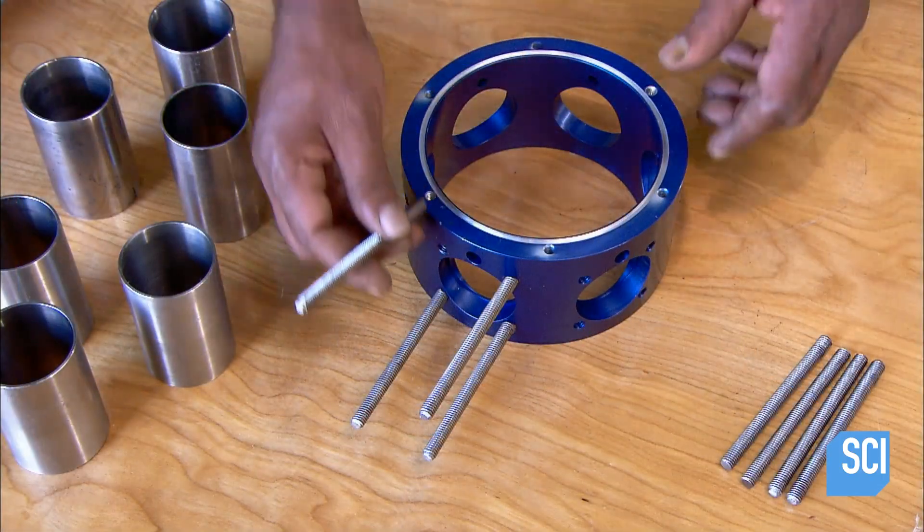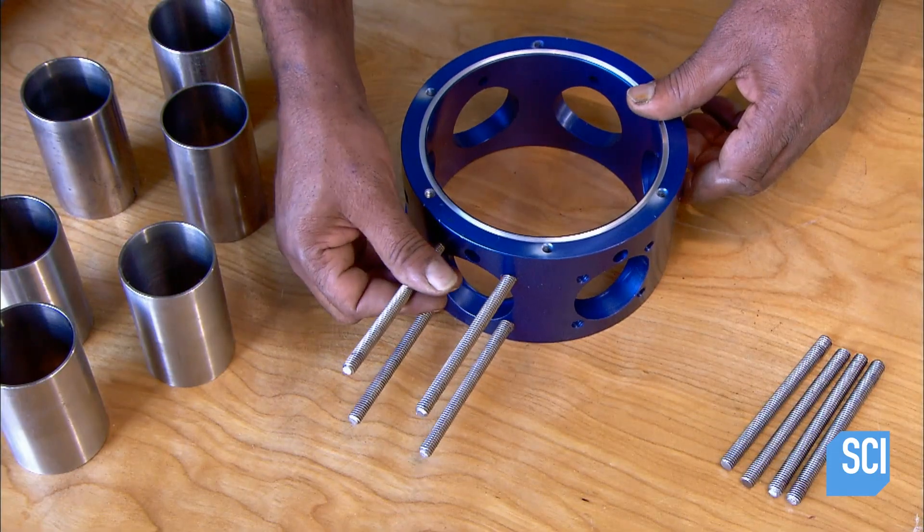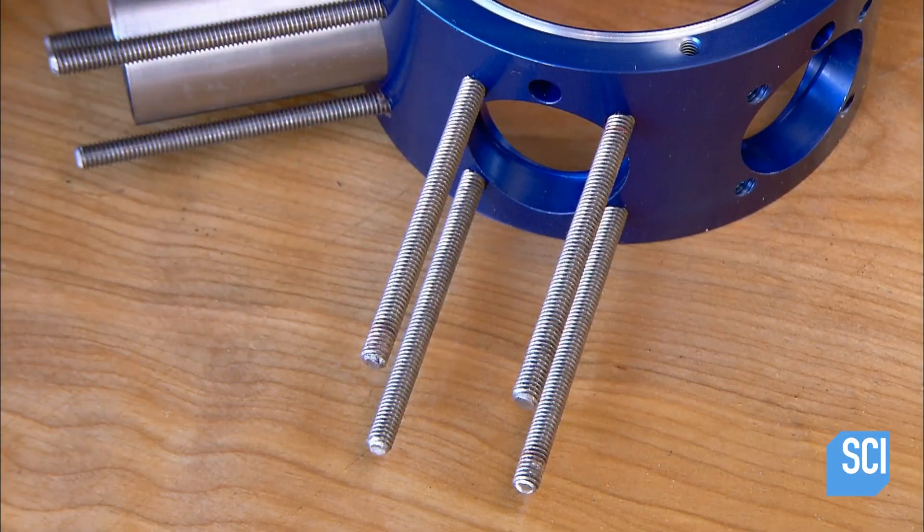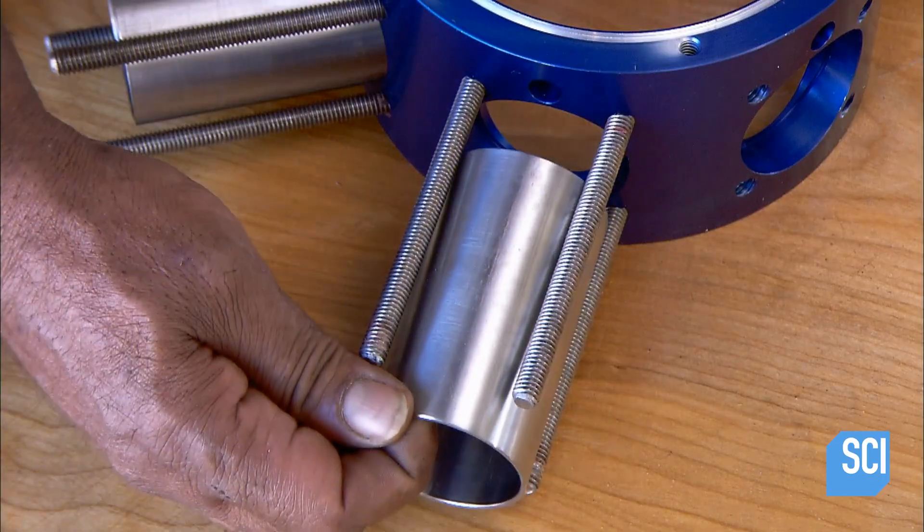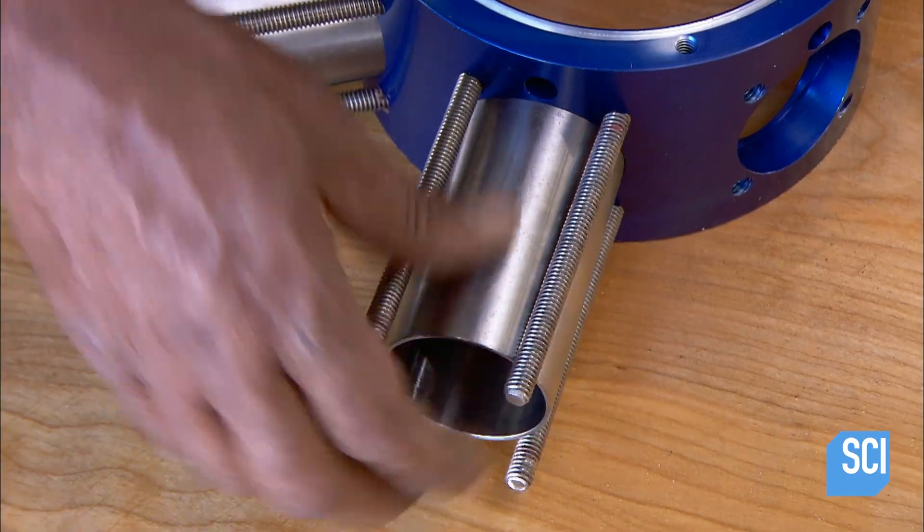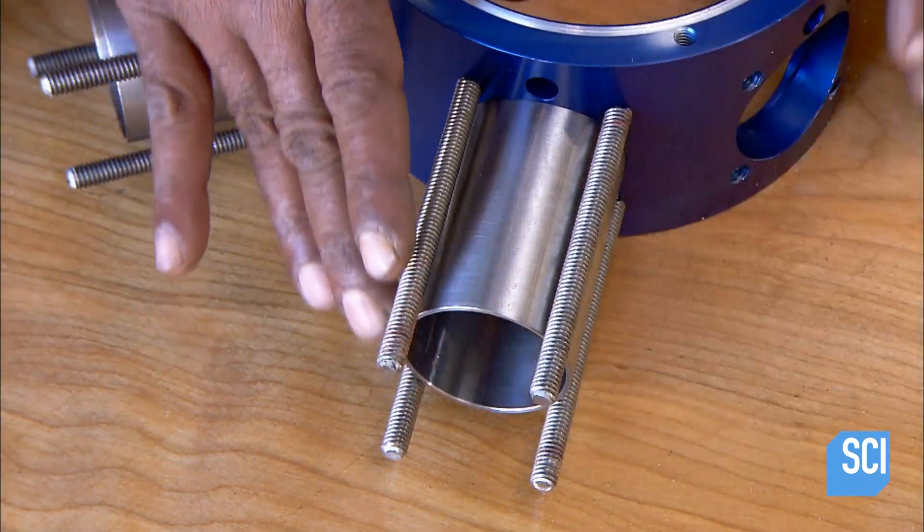The circular engine block is made of aluminum. Technicians install studs to hold six stainless steel cylinders. Due to the constant exposure to steam, all engine parts are made of rust-proof materials.